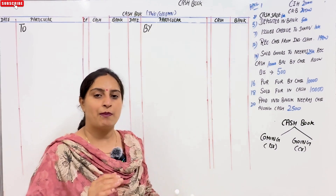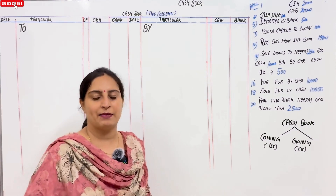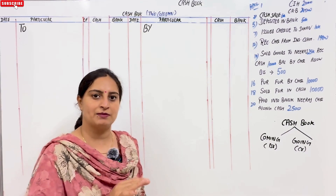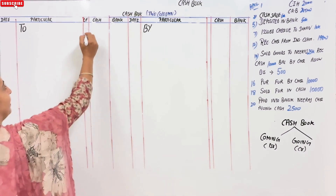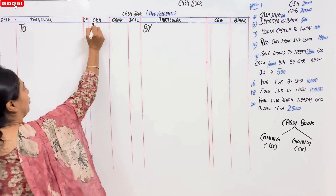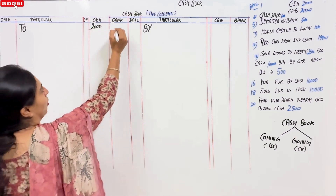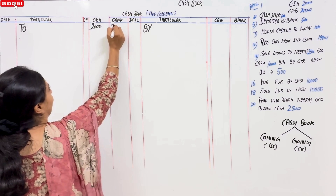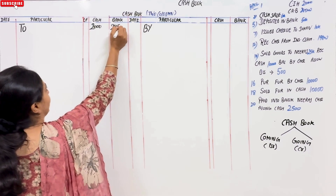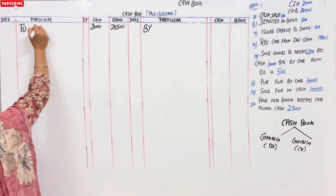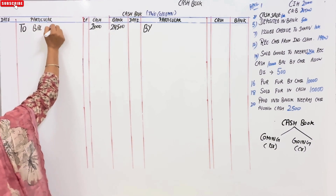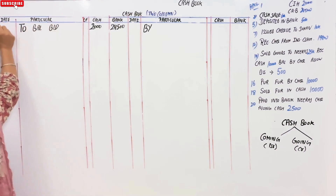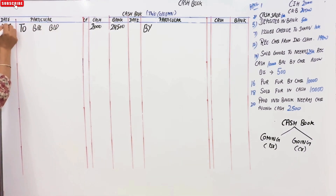The rule is: cash in hand and cash at bank — you have to give the balance. This is how much balance is available in your business. In the cash column, you will add the amount of 2,000. And in the bank column, 24,500. You will write 'BD' — balance brought down — for April 1st, 1,000.